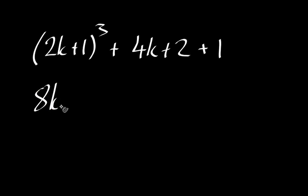That gives me 8k cubed plus 12k squared plus 6k plus 1, plus 4k plus 2 plus 1. Now I've forgotten where I've got up to in my proof, which is never a great thing to do. Okay, let's work through this in steps, do it properly.